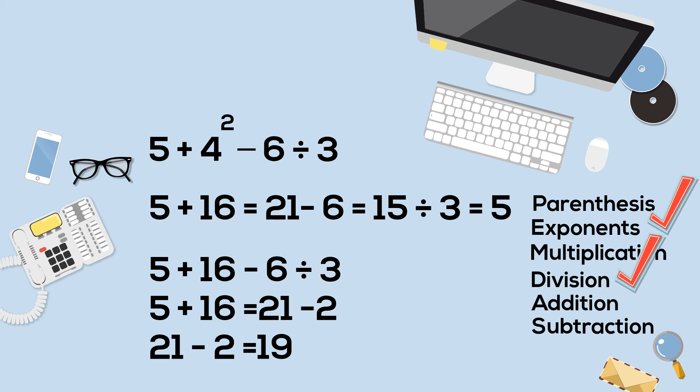And now you move down PEMDAS, and next is addition, 5 plus 16 is 21. And finally complete subtraction, 21 minus 2 equals 19. So there's the correct answer.